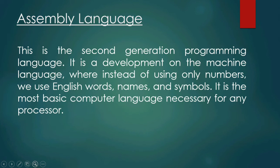In machine language, we use only a combination of zeros and ones. In assembly language, we can use English words, English names, and symbols. So writing a program in assembly language is better than writing a program in machine language. These are the two types of low-level language: machine language and assembly language.